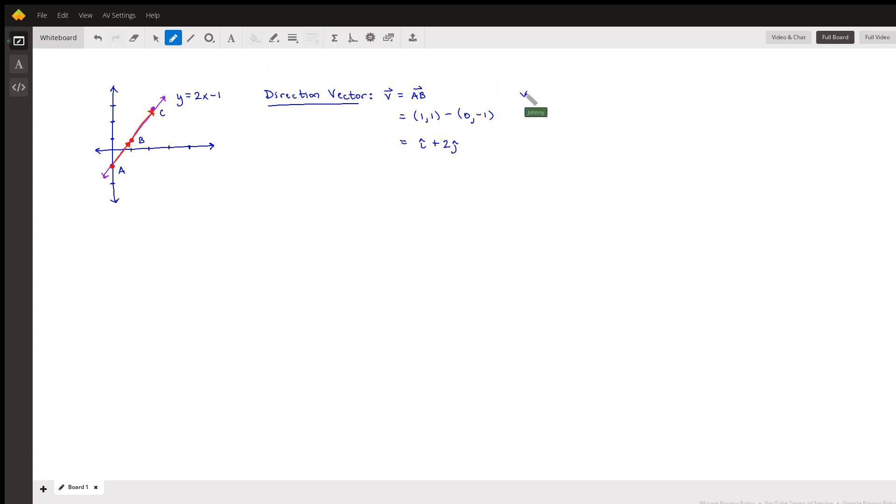So let's see how that works. So let's say instead of a, b, we chose the vector from b to c. Once again, we take our terminal point, which this time is c, and it looks like that's located at 2, 3, minus my initial point,